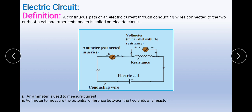A circuit is depicted by a figure. The figure shows how different components are to be connected in the circuit by using special symbols for each of the components. Every component has a special symbol, and that is how they are differentiated. Such a figure is called an electric circuit diagram.